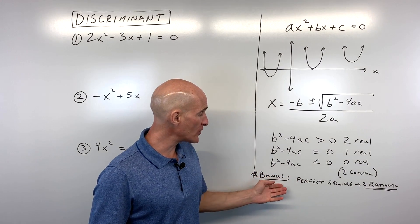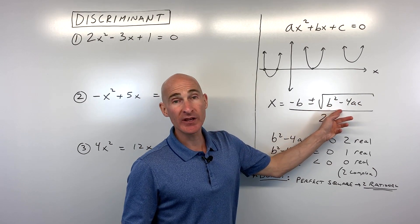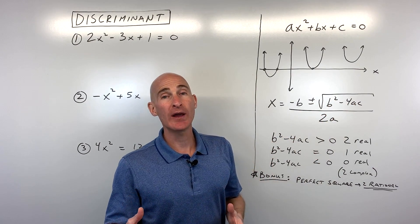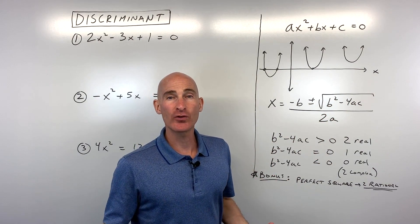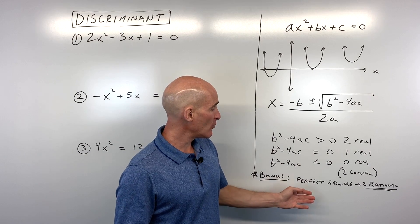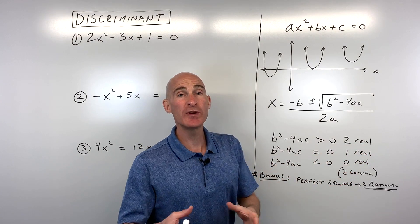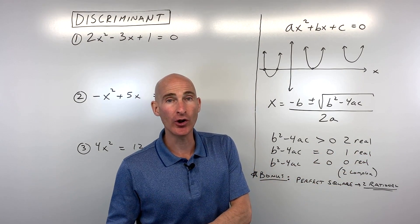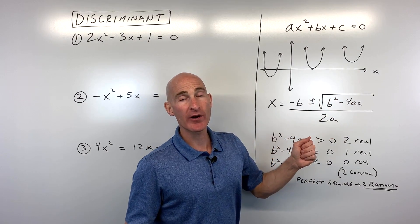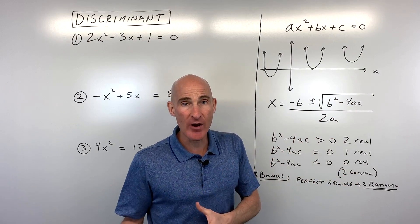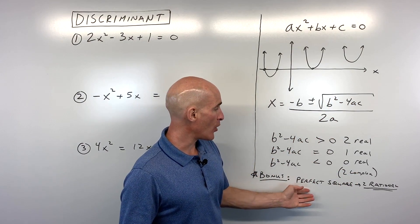A bonus: if the discriminant comes out to a perfect square, like 36 or 49, then you'll get two real solutions and those solutions will be rational. As opposed to if it's not a perfect square, the solutions would be irrational.